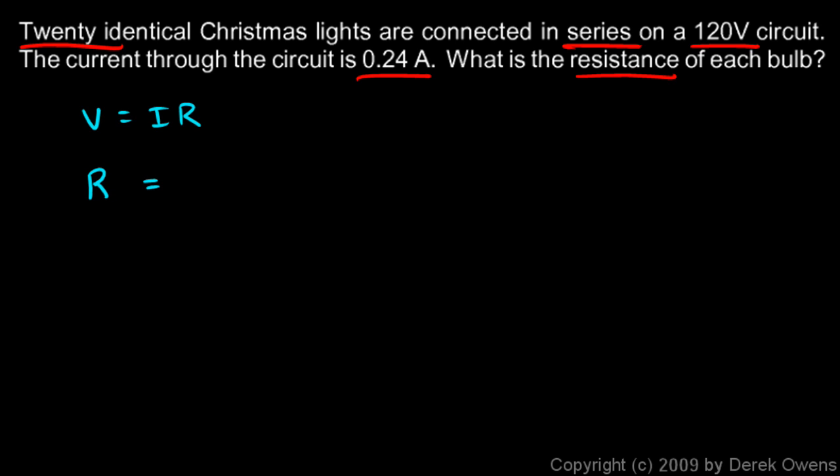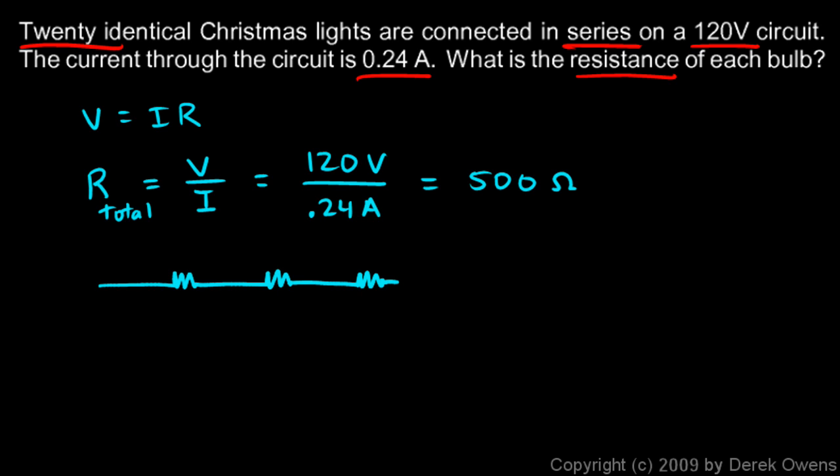I can find the total resistance if I use this formula and solve it for R. I'll put in the total voltage and the total current, so the total resistance will be V over I. We know it's 120 volts and the current is 0.24 amps. 120 divided by 0.24 comes out to 500 ohms, so that's the total resistance.